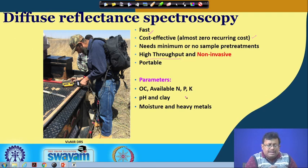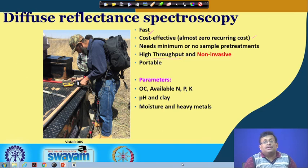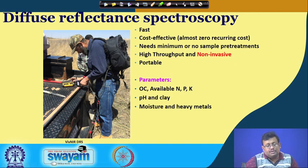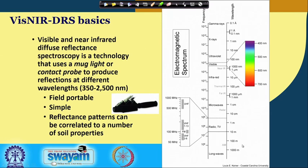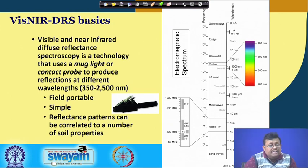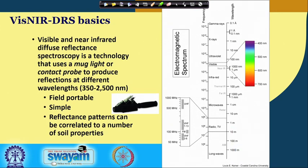The diffuse reflectance spectroradiometer can also measure different microbiological, biological, and physical properties of the soil. Why do we call it visible to near-infrared diffuse reflectance spectroscopy, or in short form VisNIR DRS? The electromagnetic spectrum consists of several regions: gamma ray, X-ray, ultraviolet, visible, infrared, microwaves, radio waves, and long waves.